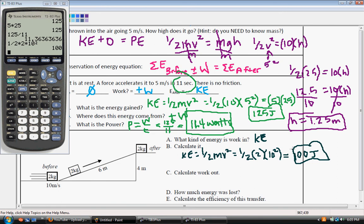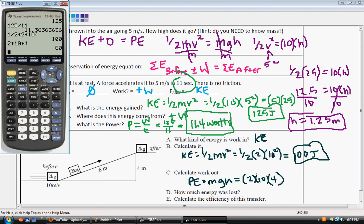Okay. The work out is what kind of energy? We have potential at the top because it's above ground, but it's not moving and it's not on the spring. So we know our work out is our potential energy, which is mass times gravity times height, which is our mass is 2, gravity is 10, and our height is 4. So 2 times 10 times 4 is 80 joules.